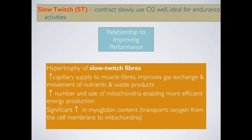We also increase the number and size of mitochondria, enabling more efficient energy production. Mitochondria is the powerhouse of the muscle cell — the more mitochondria you have, the more ATP that can be produced. A significant increase in myoglobin content also occurs. When doing an aerobic activity such as a marathon or triathlon, more myoglobin inside your muscles means more oxygen is transported from the blood into the cells and into the mitochondria to create more ATP.